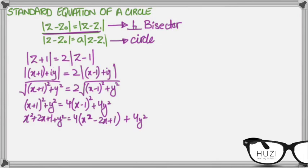And then, when you bring everything together, this would be 3x squared minus 10x plus 3y squared plus 3 equals to 0.